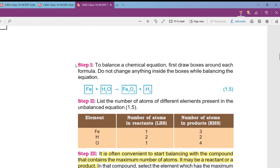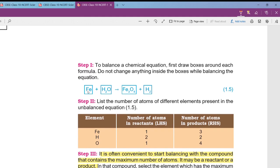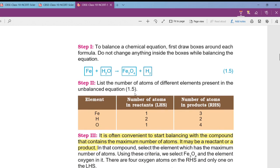First of all write the given equation and draw boxes over the molecules so that there is no probability of committing a mistake, because students generally tend to edit in between the molecule. Like if they want to balance oxygen atoms they tend to write four immediately after the oxygen because there are four oxygen atoms in the product side. To avoid that, initially draw boxes of the given molecules.